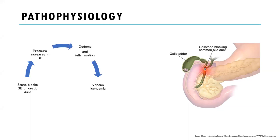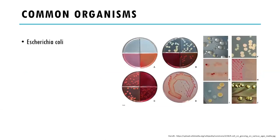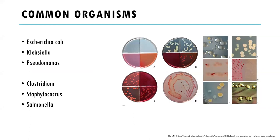A stone blocks the gallbladder or the cystic duct, pressure increases leading to edema, inflammation, and venous ischemia. Formation of mucus and empyema or pus, if not treated in time with antibiotics, can lead to necrosis, potentially perforation and fistulation. Organisms: E. coli is most common, but also Klebsiella and Pseudomonas. Clostridium, Staph, and Salmonella are less common but have been isolated from cultures.